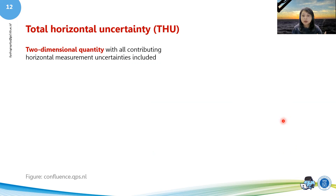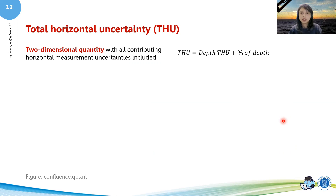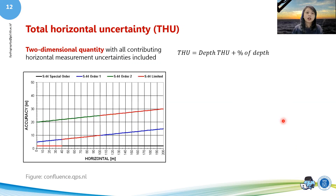This is actually how it looks when you compute THU based on the S44 of IHO. You look at the depth of the order that you're working with — we're going to talk about this in detail later — and you add the percentage of the depth that you are actually surveying.